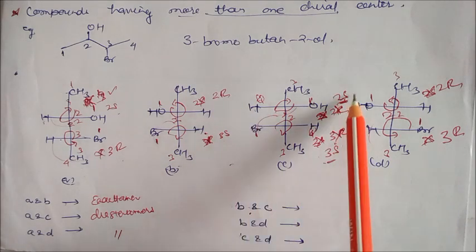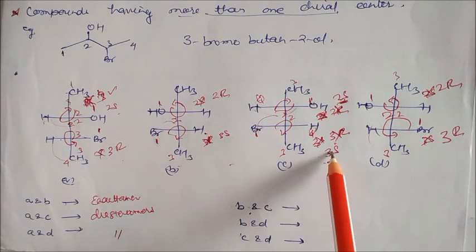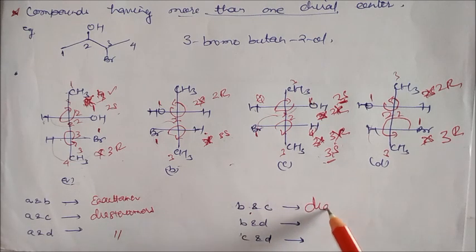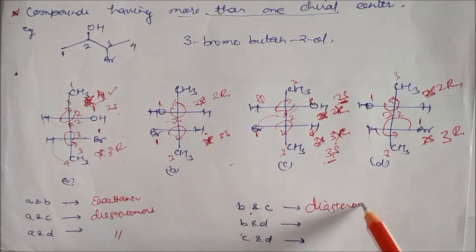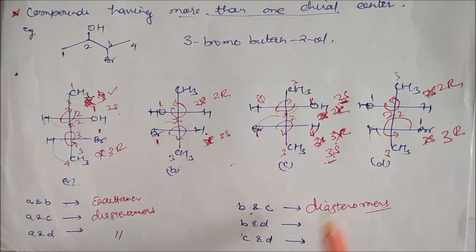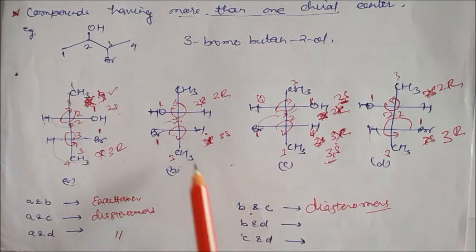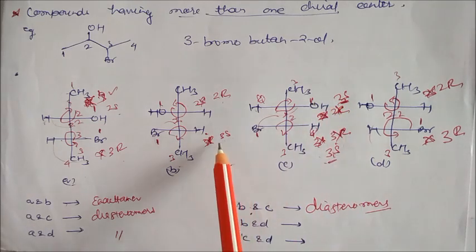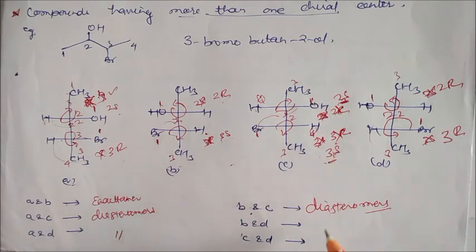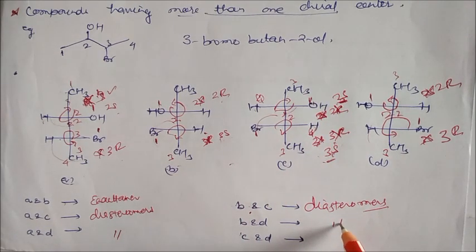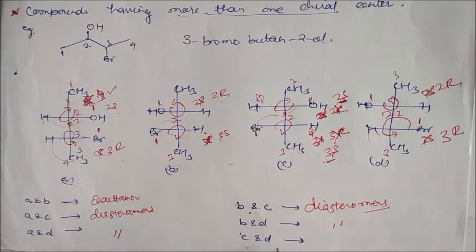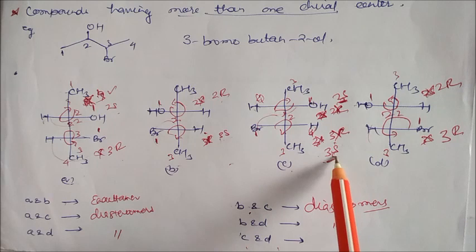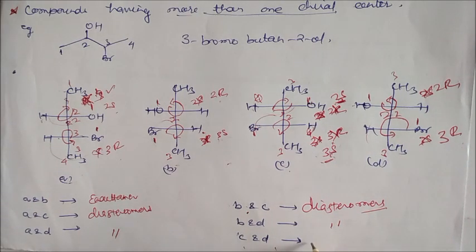Now compare B and C: B is 2R, 3S and C is 2S, 3S — again diastereomer. And B and D: B is 2R, 3S and D is 2R, 3R — so again this will be diastereomer. And last, C and D: C is 2S, 3S and D is 2R, 3R — so this will be your enantiomers.